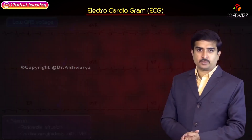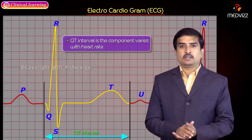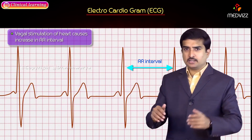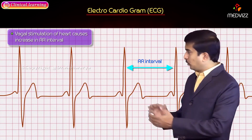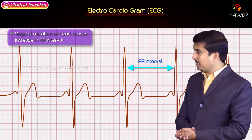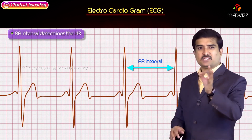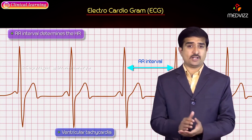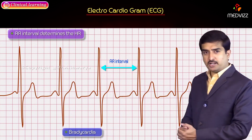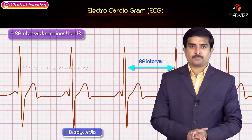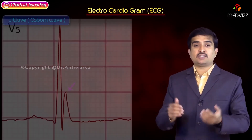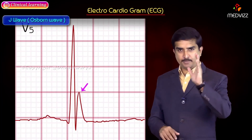The QT interval varies with heart rate. Vagal stimulation increases the RR interval, meaning a decrease in heart rate; a decreased RR interval means an increased heart rate. In ventricular tachycardia, R waves are closely approximated, while in bradycardia the RR waves are far apart. The J point is the junction between QRS and ST segment; the J wave, also called the Osborne wave, is mainly seen in hypothermia.